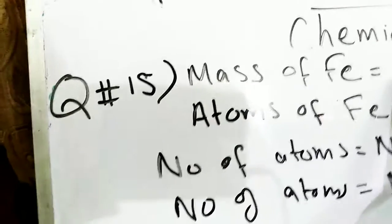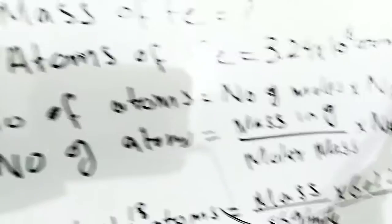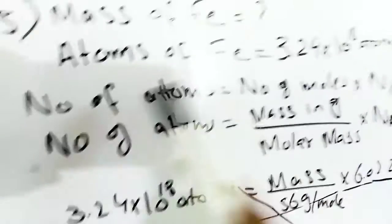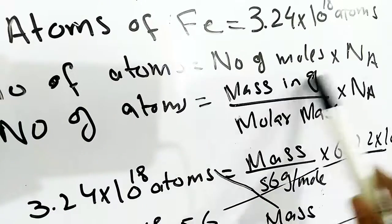Mass of iron is what we have to find out. Atoms of iron is given: 3.24 × 10^18 atoms. Now we have to use the same formula. Number of atoms is equal to number of moles × Avogadro's number.